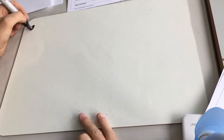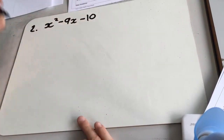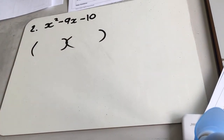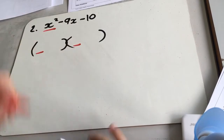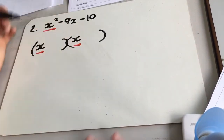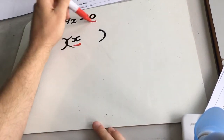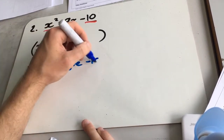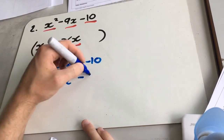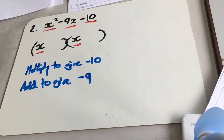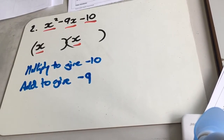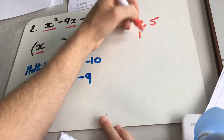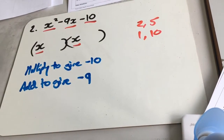Next one: x squared minus 9x minus 10. I'm going to set my brackets up. I know that there's only one x squared, so both terms are just going to be x's. Now I need to think of two numbers that multiply to give minus 10 while adding to give minus 9. We'll make a list. If you're ever stuck on these, write down the factors of 10: we could have 2 and 5, or 1 and 10. Those are the only factors available to us.